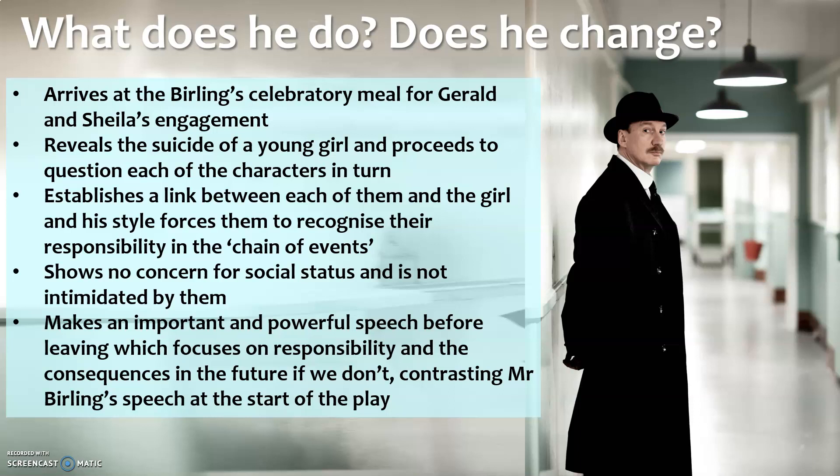The phrase 'chain of events' is a really key line from the play. He also shows no concern for social status — he's not intimidated by the Birling family, who are socially superior to him. They are far richer and more powerful, but he doesn't let that stop him interrogating them in a very straightforward, and sometimes very blunt and occasionally aggressive way.